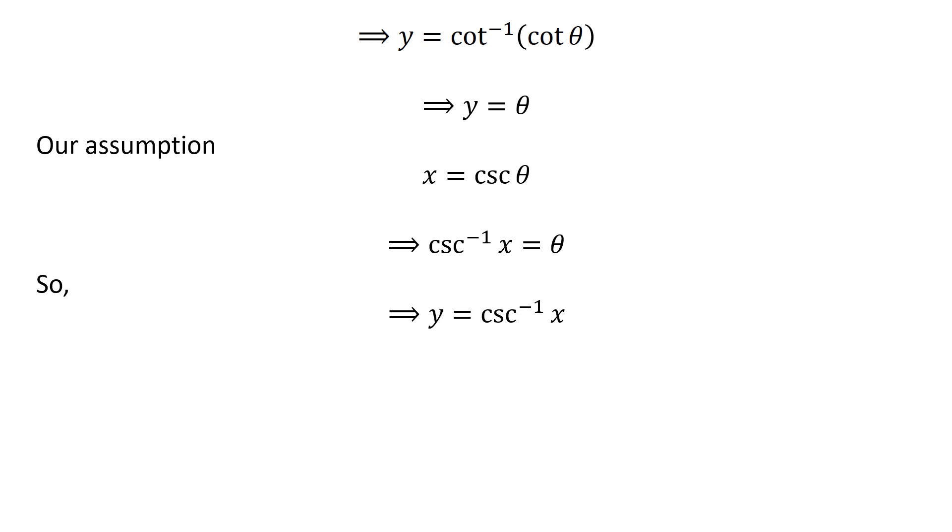So, the above statement implies y is equal to inverse of cosecant of x. Thus, simplification of inverse of cotangent of square root of square of x minus 1 is inverse of cosecant of x.